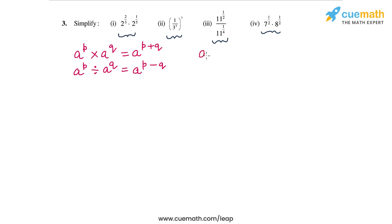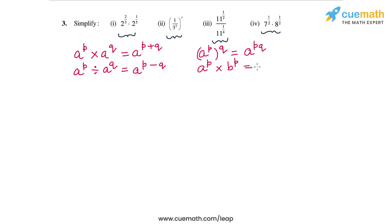The third law: when you raise an exponential term to another power — a to the power p raised to the power q — the exponents multiply, giving a to the power p times q. Finally, the fourth law: when you multiply two exponential terms with the same powers — a to the power p times b to the power p — you can write this as (ab) to the power p, so the bases multiply and the common power is factored out.